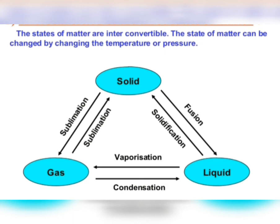Here is the interconversion between the three states of matter — solid, liquid, and gas — shown with the states of matter triangle. The states of matter are inter-convertible; they can be changed by changing the temperature or pressure. Solid gets converted into liquid by increasing the temperature — that is fusion. Liquid to solid is solidification or freezing. Liquid to gas is vaporization. Gas to liquid on cooling is condensation. Solid directly to gas is sublimation, and gas directly to solid is also sublimation, or deposition.